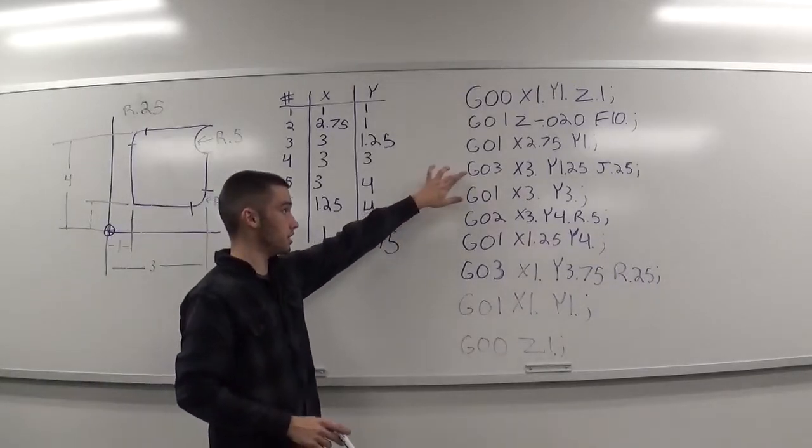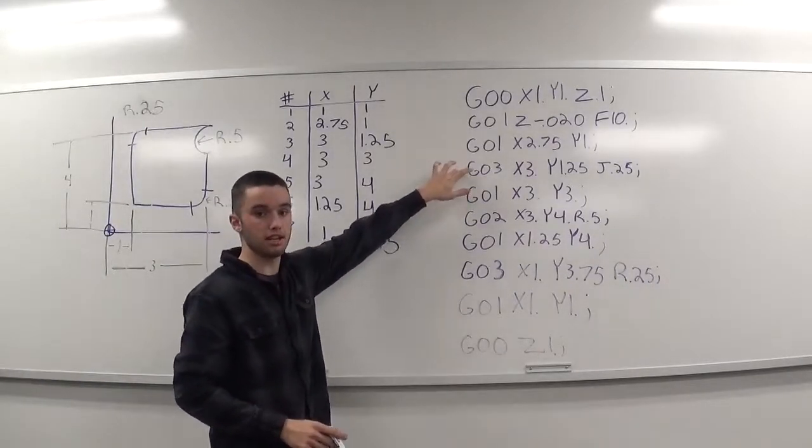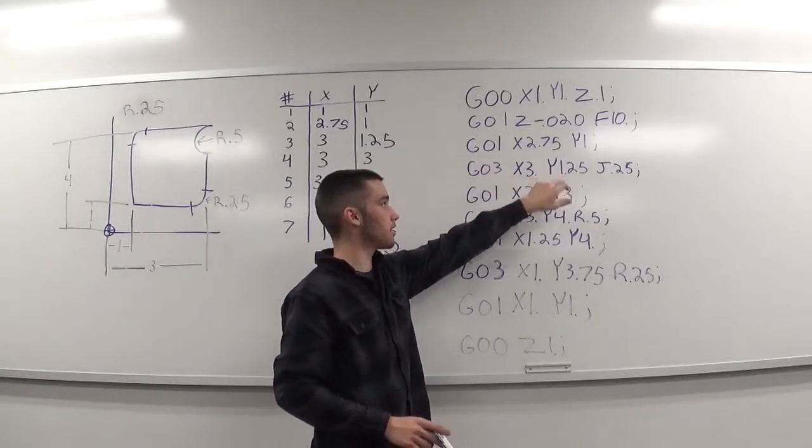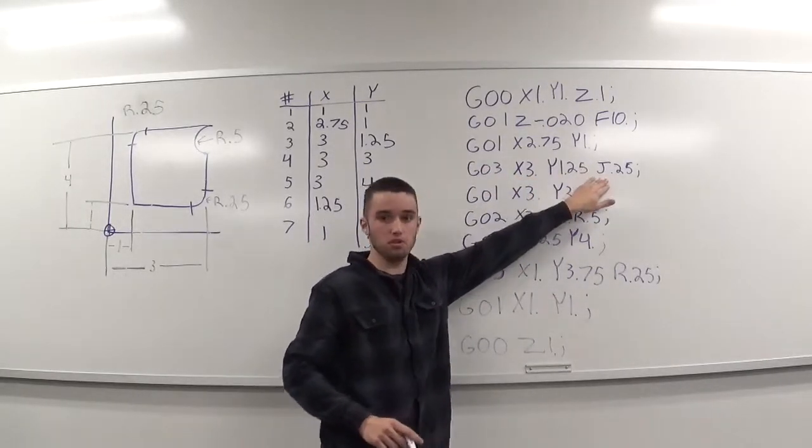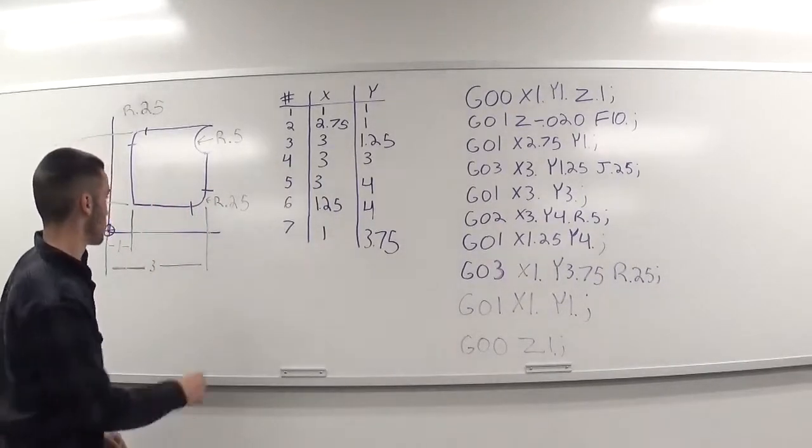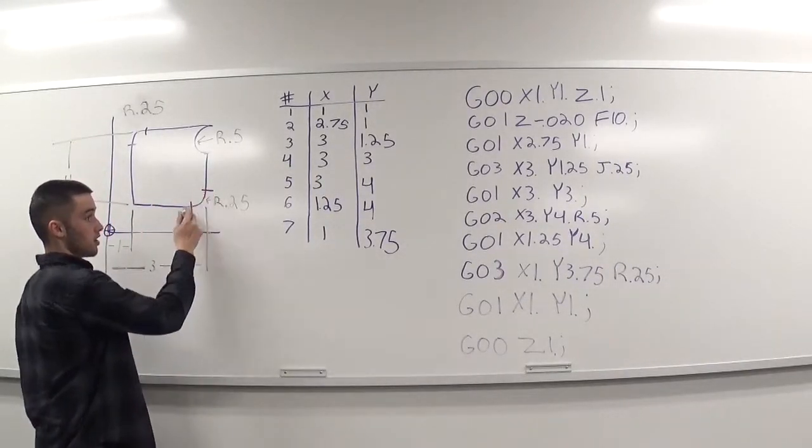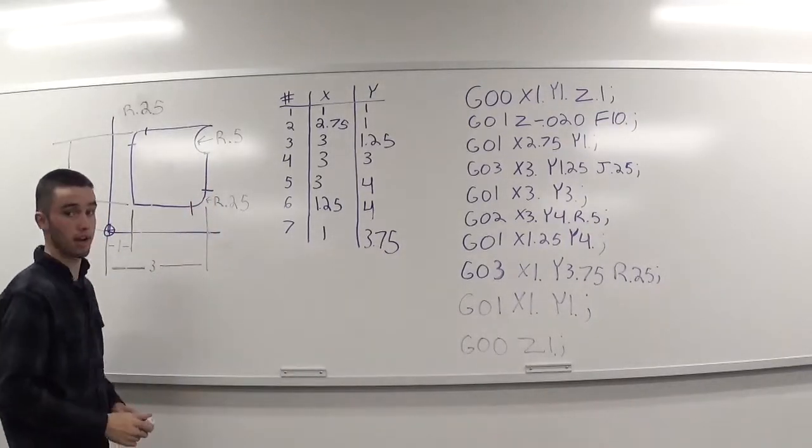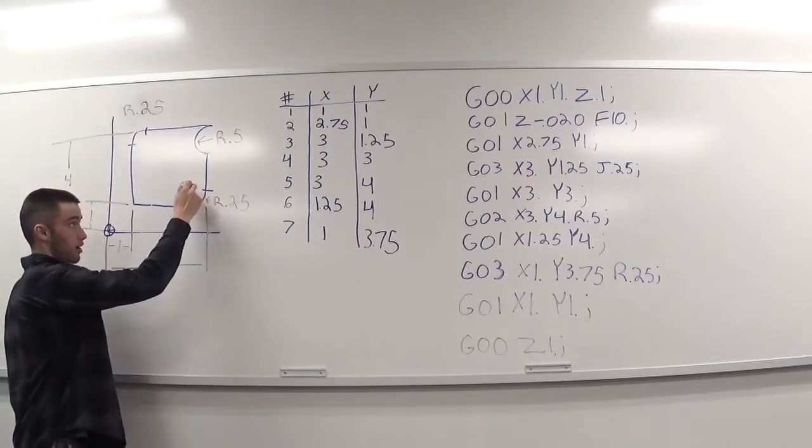Then we call up our G03. For this G03, we're using the IJK method. We call out our x and we call out our y. And then, for this scenario, we'll be using the J, which is your y. So, over here, x of 3, y of 1.25. And your J, 0.25, which is the incremental measurement, putting us right here.